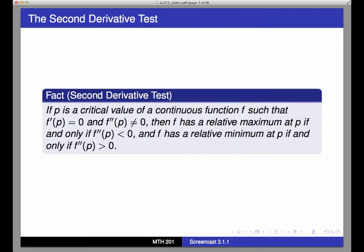Another test for classifying local extreme values is the second derivative test, which says that if p is a critical value of a continuous function f, such that f prime of p is 0, and f double prime of p is not equal to 0.